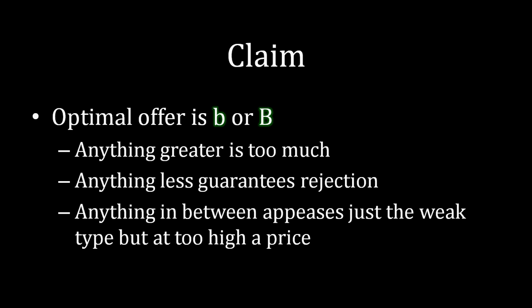Meanwhile, anything in between lowercase b and uppercase B is not going to be good. Why is that? Well, we know that it's enough for the weak type of Barbara to accept, but not enough for the strong type of Barbara to accept. And so if you're going to get yourself in a situation where only the weak type is going to be accepting, you should be scaling down that offer to be the minimal amount that the weak type needs to accept. Otherwise, you're leaving extra surplus on the table for no good reason. So that means the optimal offer is either lowercase b or uppercase B.